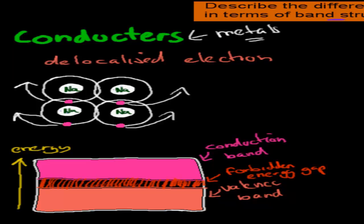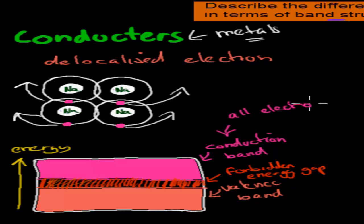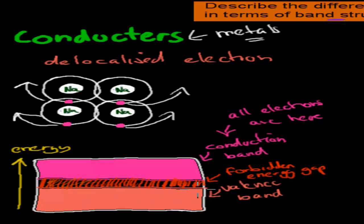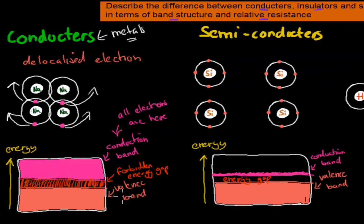So how does the band structure for a conductor look? The valence band and conduction band are one and the same — there is no forbidden energy gap. All electrons have moved into the conduction band. Every single energy level of a metal has all its electrons in the conduction band. If we talk about valence electrons or conduction electrons in a conductor, they are the same thing, because all electrons can move freely.